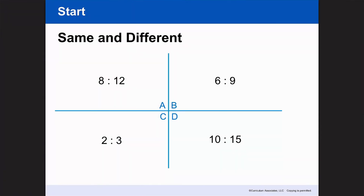Let's go ahead and look at our start problem. This is really to get our brain thinking about ratios. Looking at all of these numbers, we're trying to see how they are the same or how they are different. Looking at C, this is probably the smallest form of the ratio because I can't divide it any smaller. Looking at the other ones, I know I can make these more friendly or equivalent ratios.